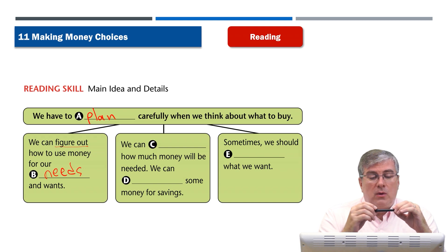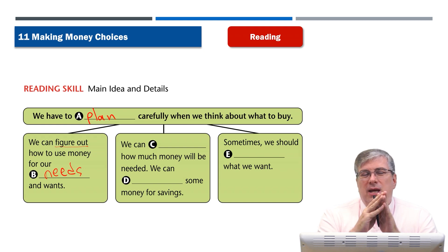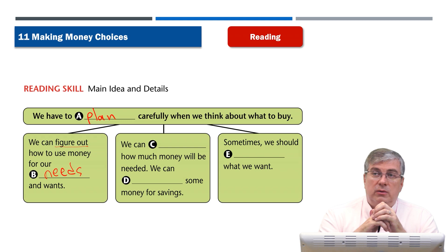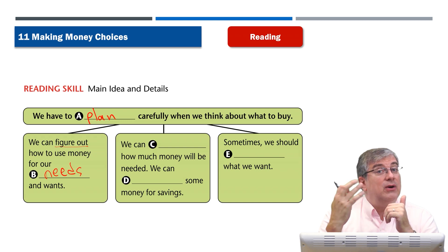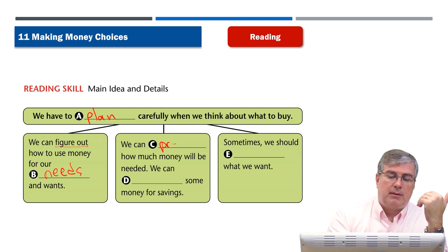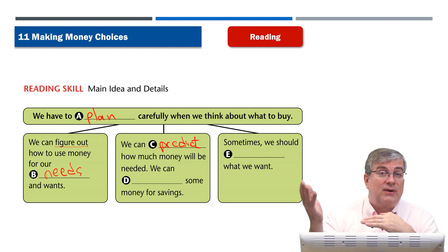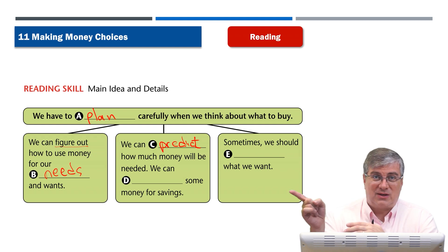We can predict how much money will be needed. When we talked about thinking about the future — we know the gas bill every month is maybe $200. So next month it's going to be $200. We can think ahead and make a very good guess because of our past experience. That means we can predict. We can predict how much money will be needed. We're going to need $200 for gas next month, so don't spend that money — save it for the gas bill.